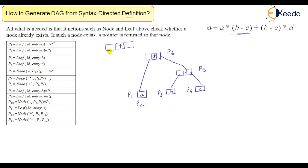p1 points to node p1, and p6 is the plus node. There is another multiplication for p1 and p5 — that has already been done. Plus has been done, and minus has been done. The next step is the leaf of b, which is already there and will be denoted as p8.